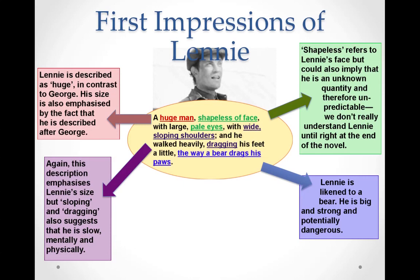The final point is that he's described as dragging his feet the way a bear drags his paws. It's worth drawing attention to the word 'paws,' because paws are used later on to describe Lenny's hands — and remember we spoke about how hands are important. Lenny is likened to a bear here, which again emphasises his size and strength, but also that he is very dangerous. This combination of strength and mental slowness — his almost childlike personality — is quite dangerous when combined.